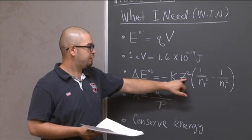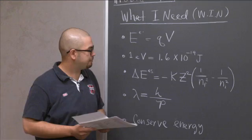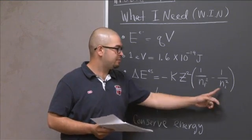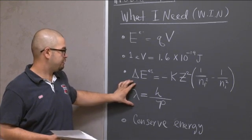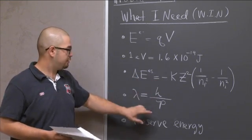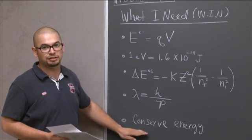And the z squared is the atomic number of your atom of interest. And then the nf and the n sub i are your transition states. The de Broglie wavelength, which is given by lambda equals Planck's constant divided by the momentum. And always remember that you need to conserve energy.